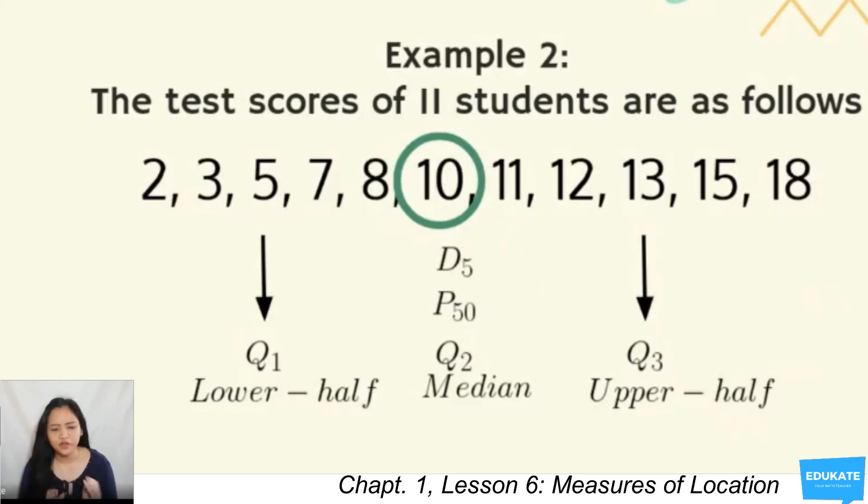Let's say we have the following scores. The test scores of 11 students are 2, 3, 5, 7, 8, 10, 11, 12, 13, 15, and 18. From the scores, we can immediately identify the median because the data are already arranged in ascending order and the number of students is odd. When you're looking for the median, get your total number of observations, which is 11, plus 1, that's 12, divided by 2, that's 6th. So your 6th data is the median. The 6th data here is 10.